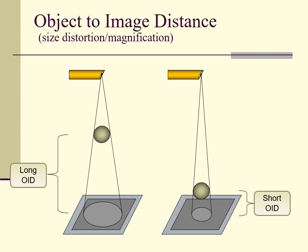In this image, one can clearly see that the ball with the longer object-to-image distance is outlined with more divergent rays. These rays have greater opportunity to spread before they reach the image receptor, yielding a magnified image.